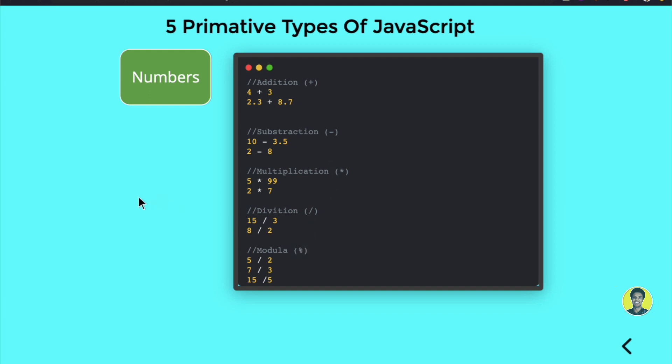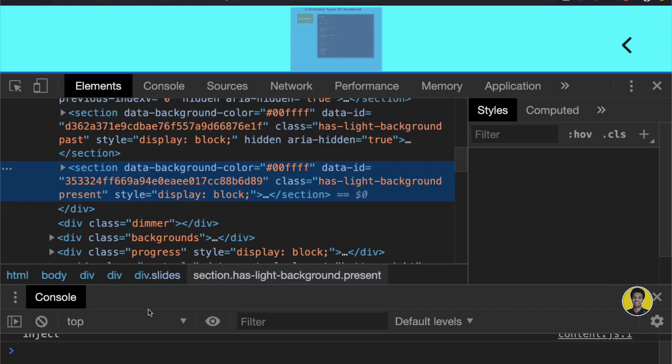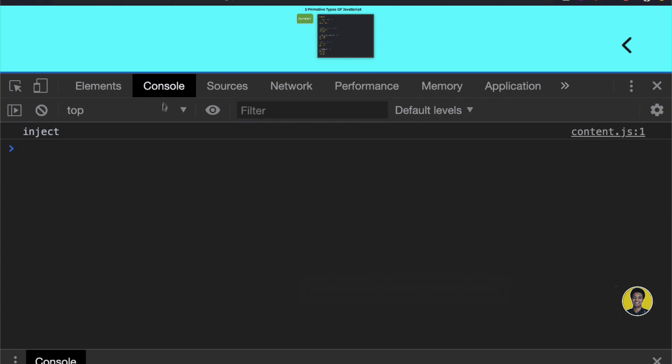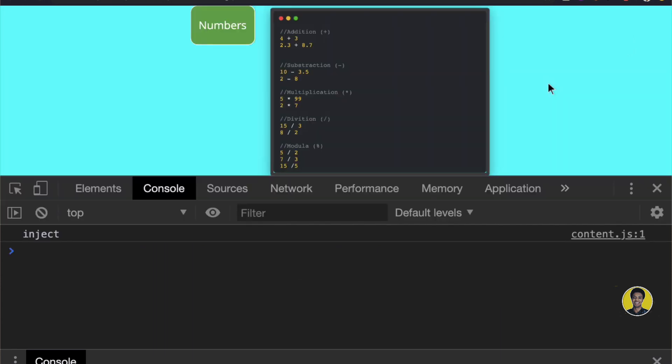First, let me open the JavaScript console. I'll right-click and go to inspect. This will open the console section, and you can see this area here.